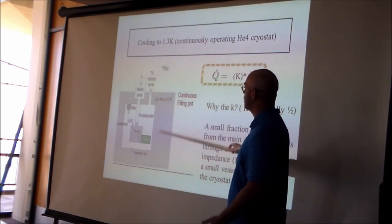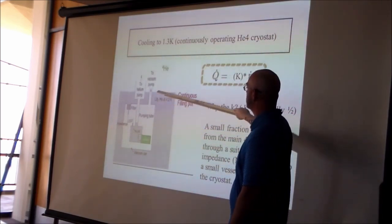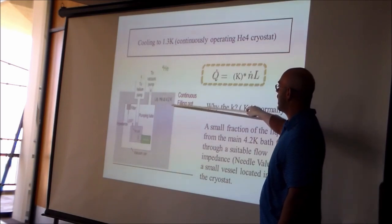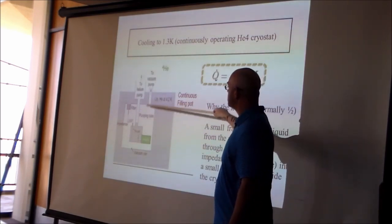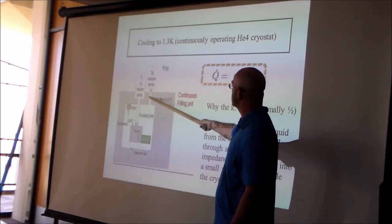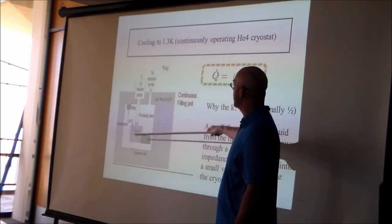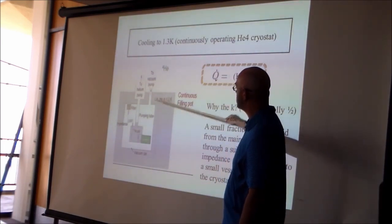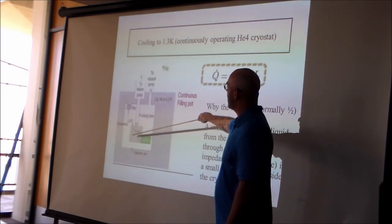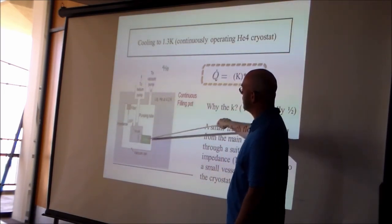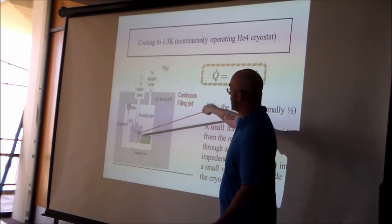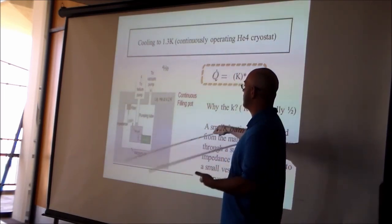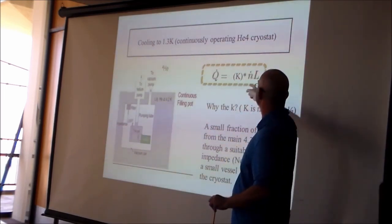In practice, an evaporative refrigerator has an outer jacket of liquid helium at 4.2 Kelvin, with a vacuum chamber inside as a thermal shield. A pump keeps the inner chamber evacuated. A small container of liquid helium-4 at reduced pressure is where evaporative cooling happens. A sample inside gives heat to the helium-4, which vaporizes, producing cooling power Q̇ = ṅL.